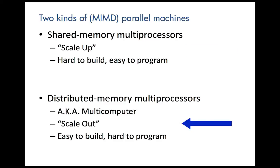On the other hand, there are the distributed memory multiprocessors, also called multi-computers. A distributed memory multiprocessor is really just a collection of independent computers that share nothing. The term used generally to describe this is scale-out rather than scale-up. Because they share nothing, explicit messages are required to communicate between processors. The conventional wisdom is that these were easy to build but more difficult to program — but we're going to teach you how to do it using MPI in this class.